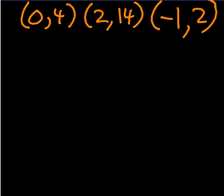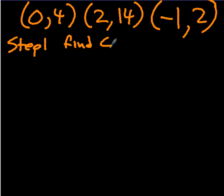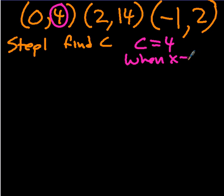This is writing a quadratic equation given three points, so we're going to do a step-by-step process. Step one is find C. C is the y-intercept, so that's four. It's when x equals zero, y equals C. So that's easy.